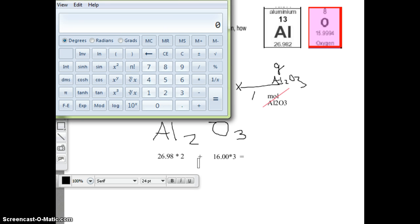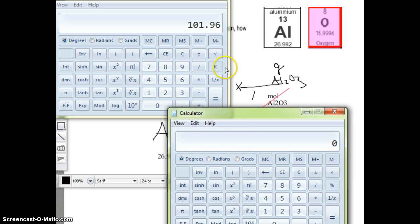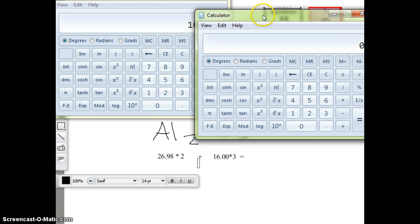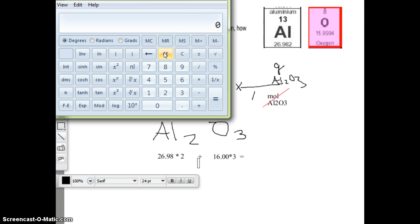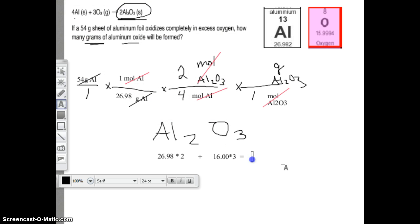26.98 times 2 plus 16 times 3. Now be careful, you have to worry about order of operations. So if you're not sure if your calculator does it correctly, put it in twice. 16 times 3 is 48, times 2 plus 48 is 101.96 grams. That's how much one mole of aluminum oxide weighs.